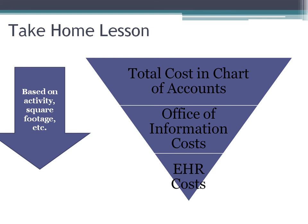The take-home lesson is simple. The total cost of each account in the ledger is allocated to various units within the office of information. Then costs are further allocated to operating the electronic health record. The basis of these allocations are usually activities of the personnel, but sometimes other factors such as square footage or total budget of the unit may be used to make the allocation.